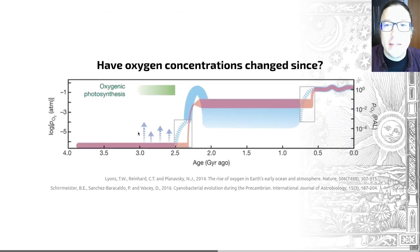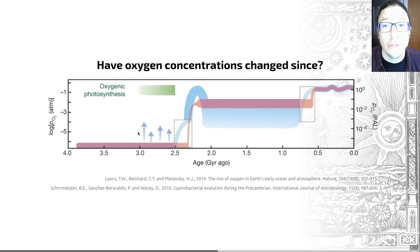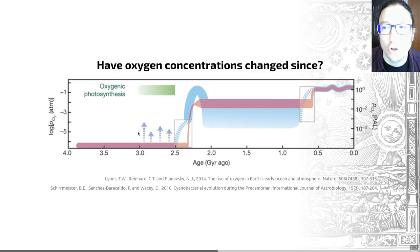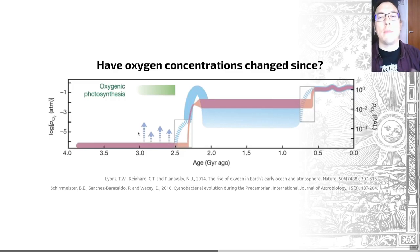We think cyanobacteria are the first organisms to evolve photosynthesis that releases O2. Certainly, things like plants come much later in geological history — and spoilers, they actually make use of cyanobacteria for this. More on that later.